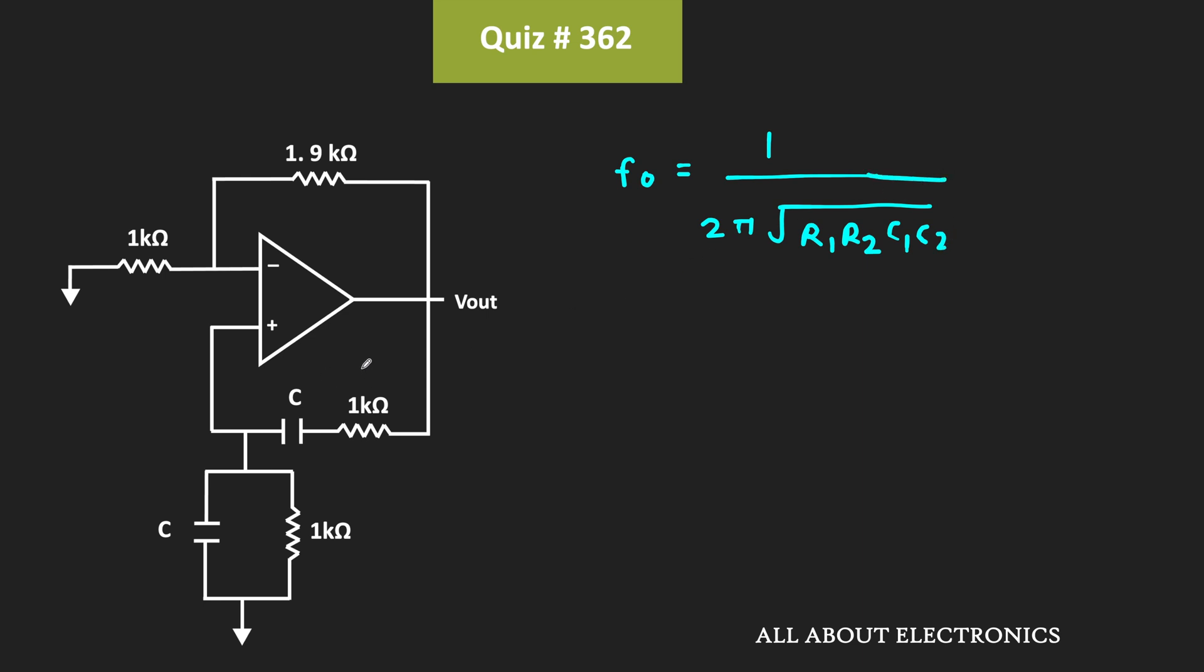Here, these R₁ and R₂ are 1 kΩ, while we need to find the value of C. Since R₁ equals R₂ and C₁ equals C₂, we can write this expression as f₀ equals 1 divided by 2π times RC. By choosing the value of R and C, we can get oscillation at a particular frequency.